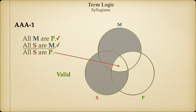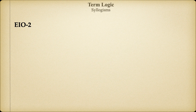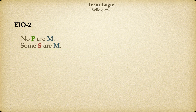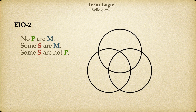Now let's try another one. For an EOI-2 argument, the major premise will contain the predicate of the conclusion — that is, P — and the middle term will be in the predicate position. The minor premise, which contains the subject of the conclusion, will also have the middle term in the predicate position, again because this is a Figure 2 argument. Now let's add our conclusion and create our Venn diagram. The bottom circles represent the subject and predicate of the conclusion, and the middle term goes on top.